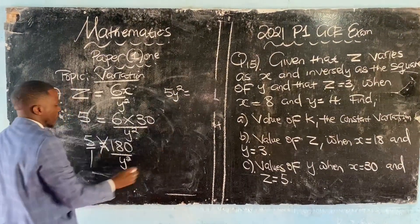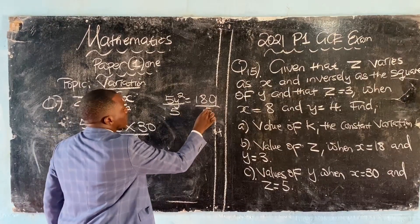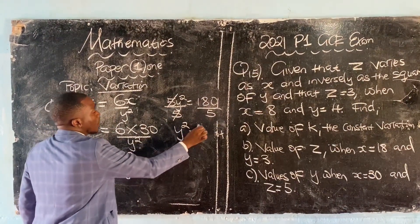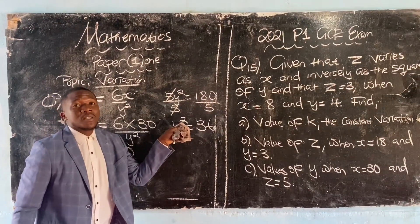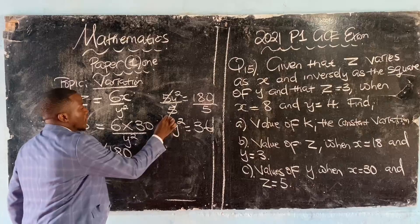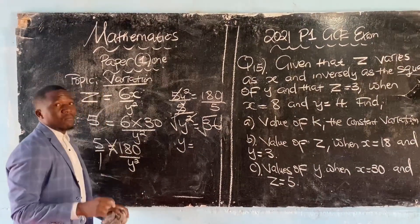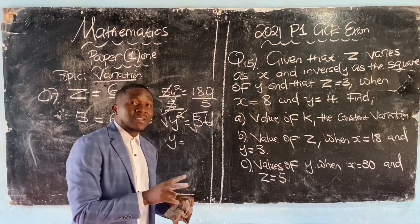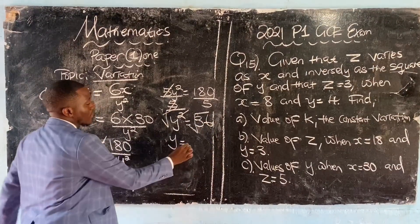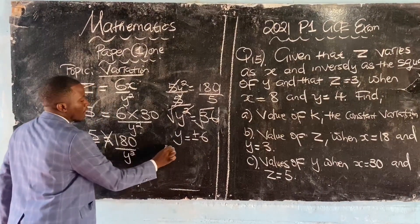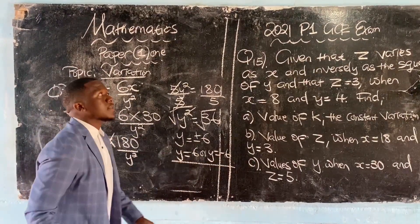Cross multiply: 5y squared equals 180. Divide by 5: y squared equals 36. Introduce a square root on both sides. The square root and square cancel on the left. The square root of 36 has two values: positive and negative. y equals positive or negative 6. These are the answers.